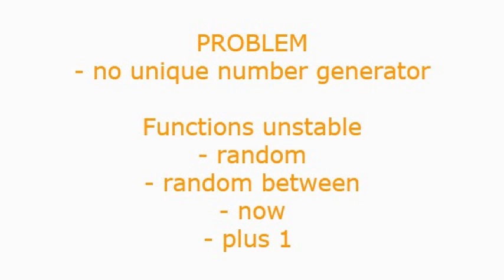The problem is that Google Spreadsheets has no unique number generator such as MSXS that generates unique numbers in the form of a product key. Using Google's functions such as RAND, RANDBETWEEN, the NOW function, or even a formula where you have the previous cell plus one is problematic because all these functions are unstable.